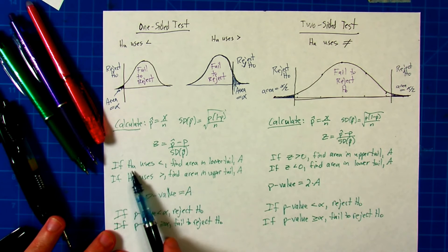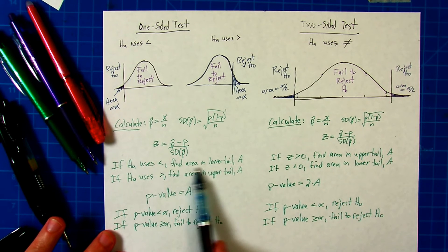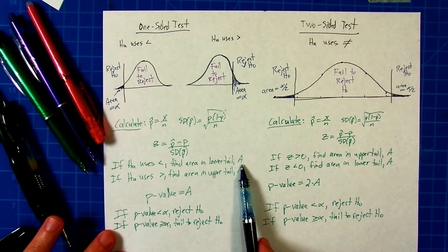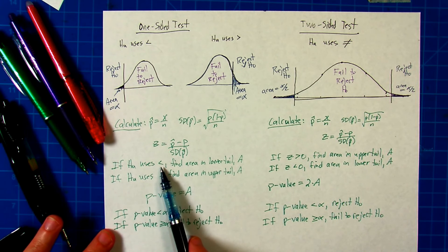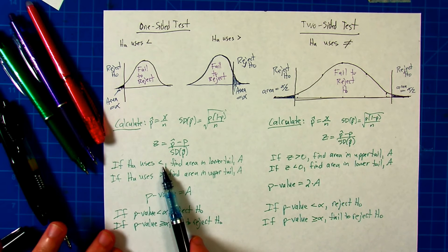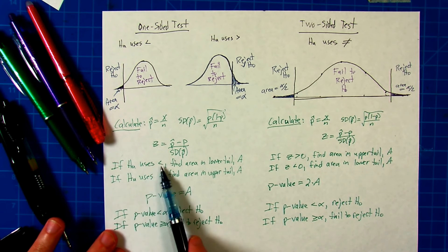From there, if the alternate hypothesis uses less than, you find the area in the lower tail, which I'll call A. Whatever your z-score is, use GeoGebra or your normal model calculation. Find the area less than that z-score to correspond to the less than in the hypothesis.